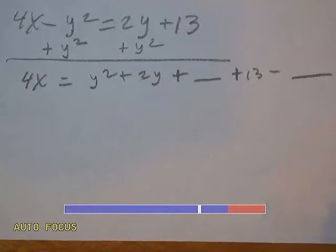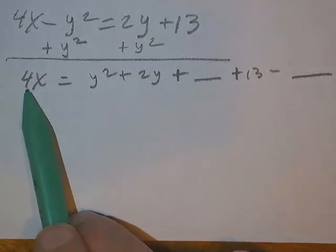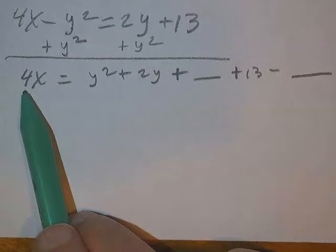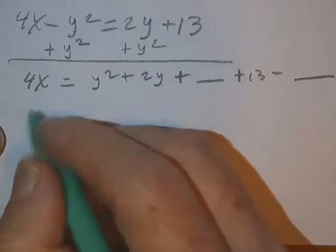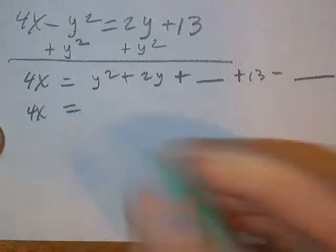And look, we're going to want one x at the end. We'll divide everything by four, or we'll actually multiply it by fourth when we get done, so hang on to that.